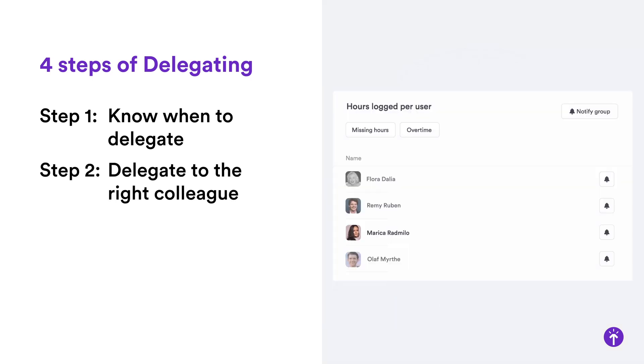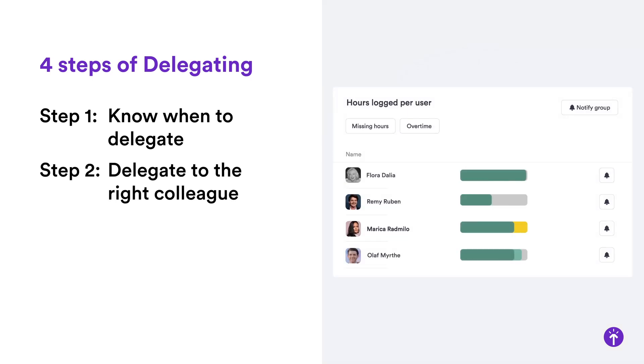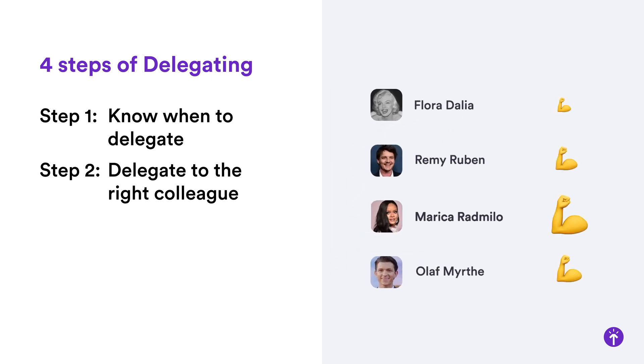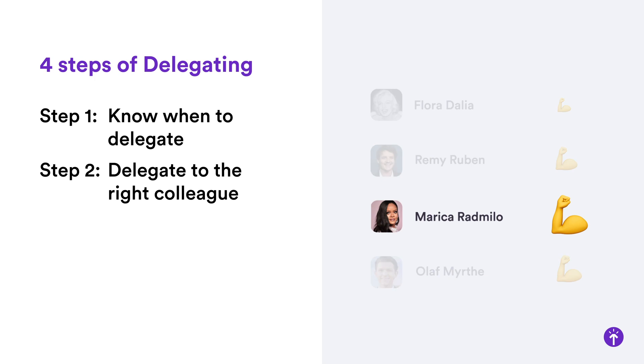Step 2: Delegate to the right colleague. It's not about which team member has the most capacity — it's about who will do the best job. You know you've chosen the right person if they can just get on with it.